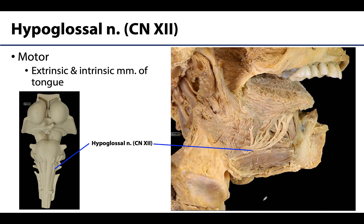Last but not least, cranial nerve 12 is the hypoglossal nerve, also entirely efferent. It innervates both extrinsic and intrinsic muscles of the tongue, except for the palatoglossus muscle. The nerve originates on the medulla oblongata and spreads throughout the extrinsic and intrinsic tongue region.